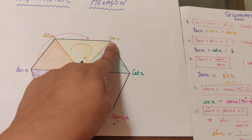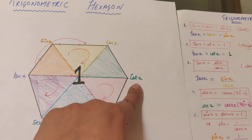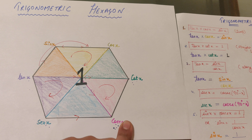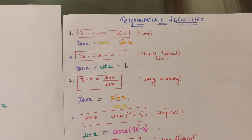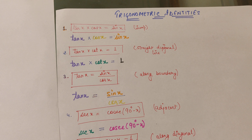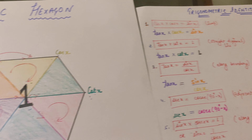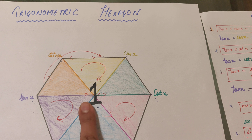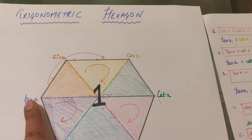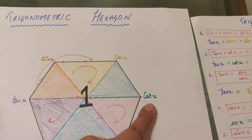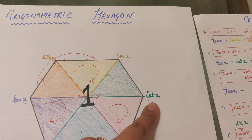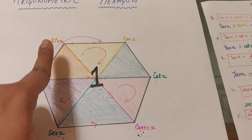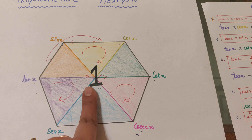The first identity is tan x · cos x = sin x. If you look at the hexagon, tan x into cos x equals sin x — that is, if you jump over a single trigonometric function, you get the middle trigonometric function. So multiplying tan x · cos x, jumping over one function, gives you sin x.